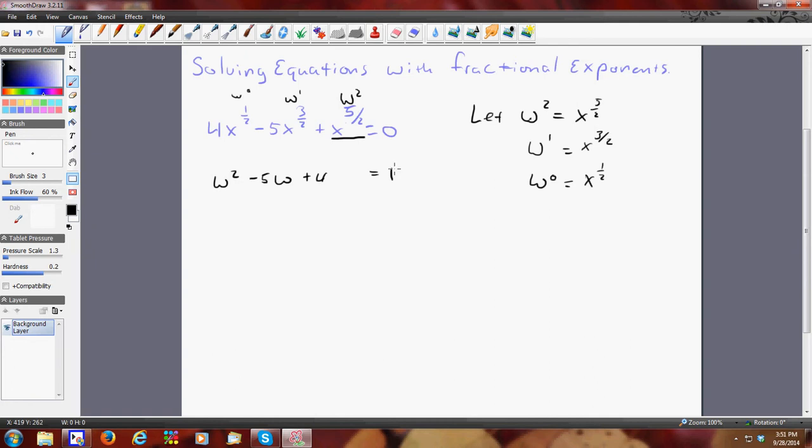So now, and that should be a 0. And so now I have this trinomial, and this is super easy to solve. And I'm going to say w minus 4 and w minus 1. Therefore, w minus 4 equals 0 or w minus 1 equals 0. I get w equals 4 or w equals 1.